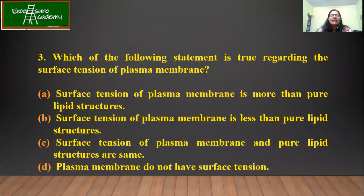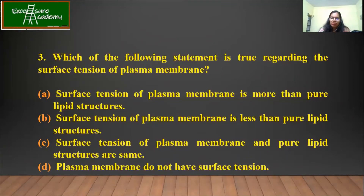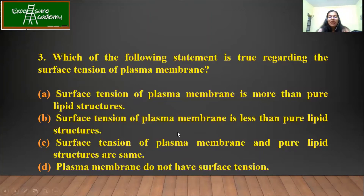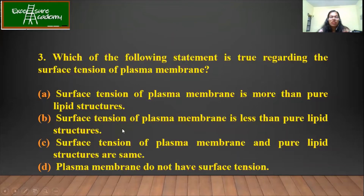Now, which of the following statements best describes the surface tension of the plasma membrane? One thing to know is that whenever you have a pure substance compared with something else, the pure substance always has maximum surface tension. Surface tension of plasma membrane being more than pure lipid structures? No. Less than pure lipid structures? It might be. Both being the same? This cannot be possible because the plasma membrane contains phospholipids as well as proteins, acting as a contaminant to phospholipid surface tension. So obviously they cannot have the same surface tension. The answer is that the surface tension of the plasma membrane is less than that of pure lipid structures.